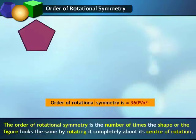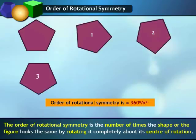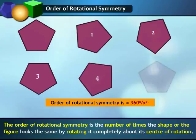The order of rotational symmetry is the number of times the shape or figure looks the same when rotating it completely one full rotation about its center of rotation.